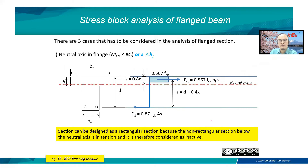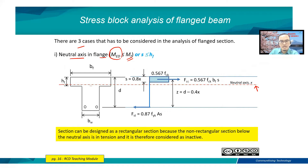Here is the stress block analysis for flange beams. There are three cases to consider. The first case is when the neutral axis is in the flange, where the moment resistance design M_F is compared with M_ED. When the neutral axis is inside the flange, the section can be designed as a rectangular section because the non-rectangular section below the neutral axis is in tension and is therefore considered inactive.